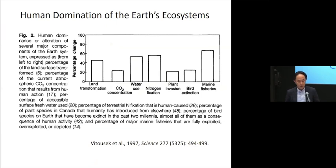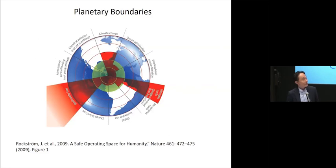Almost half of the arable land is already used for human use, along with fresh water and marine fish resources. Scientists have now identified certain areas where we are already in a kind of dangerous zone in terms of environmental issues — for example, biodiversity and certain types of pollution like nitrogen.